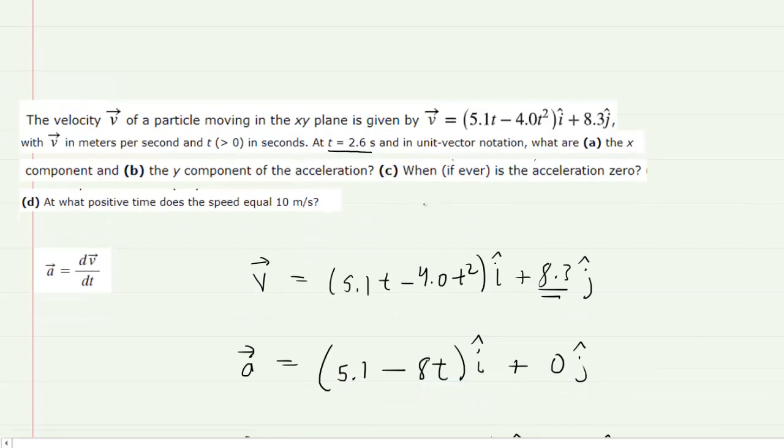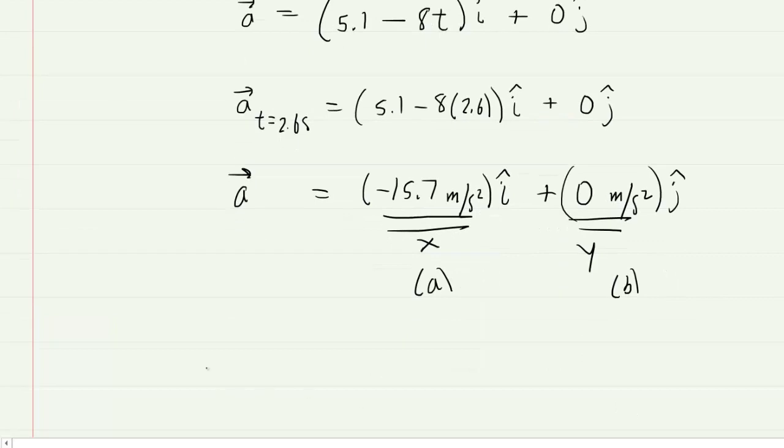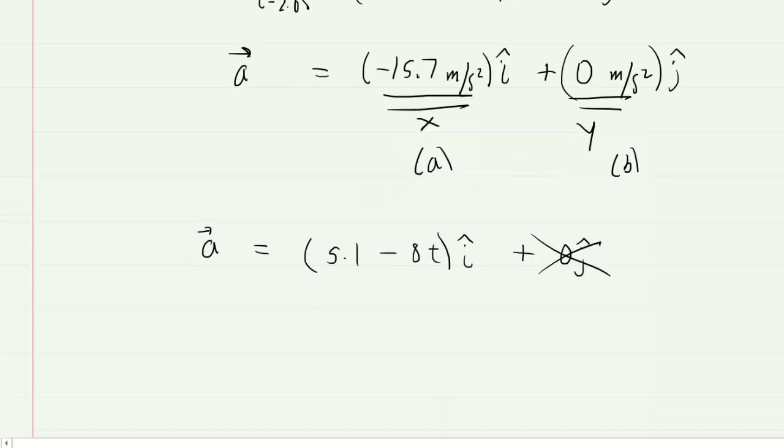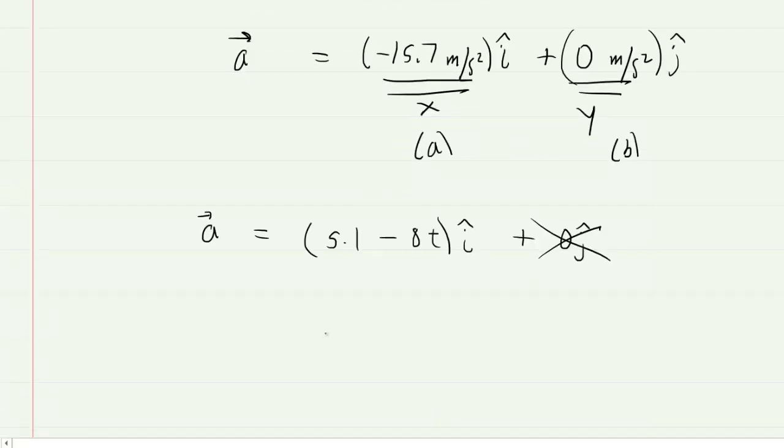We come back up, and in part C, we are asked when, if ever, is the acceleration equal to 0. So let's rewrite our acceleration vector. We can actually start omitting the y component, because it is 0. And since they want the acceleration equal to 0, we would take the x component acceleration and simply set that equal to 0.